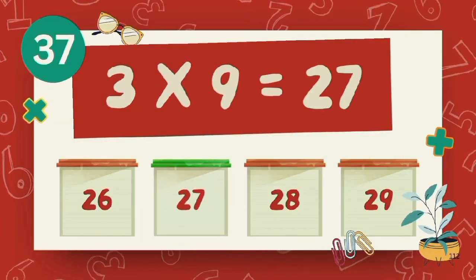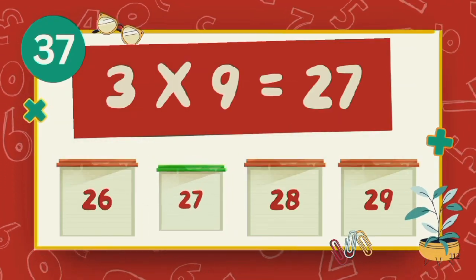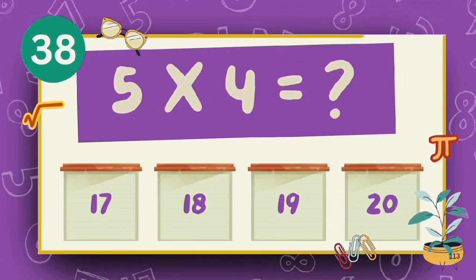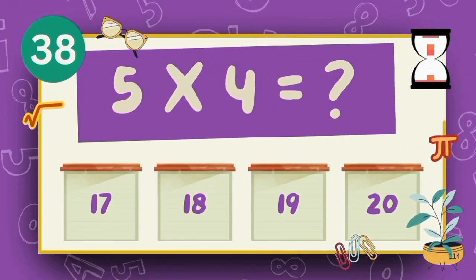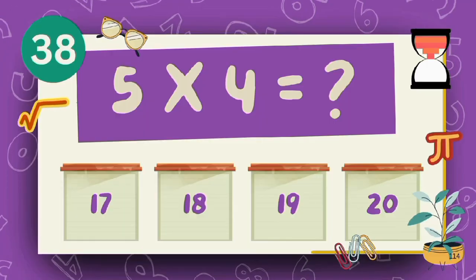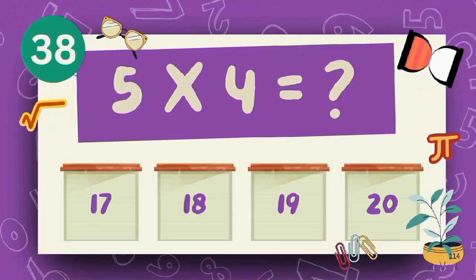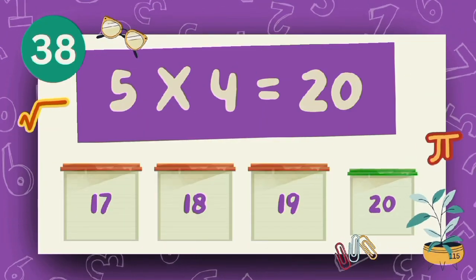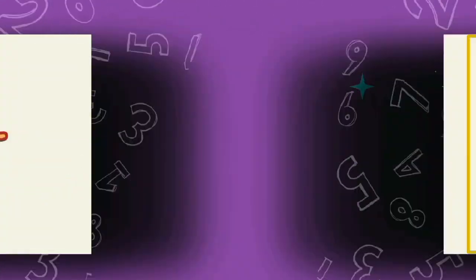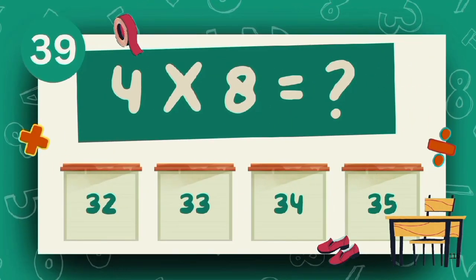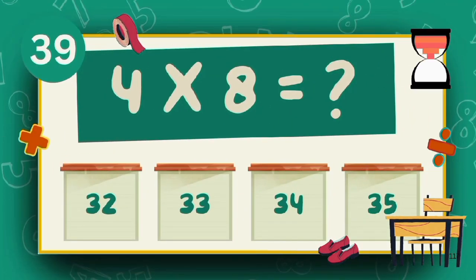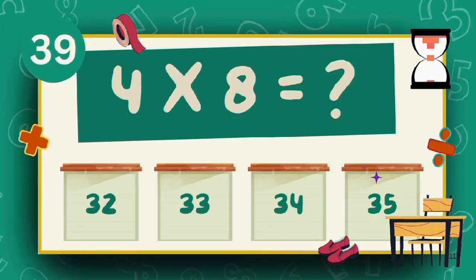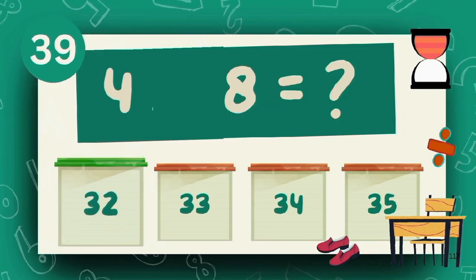What does 9 multiply 7? The answer is 37. What does 5 multiply 4? The answer is 20. What is 4 multiply 8? The answer is 32.